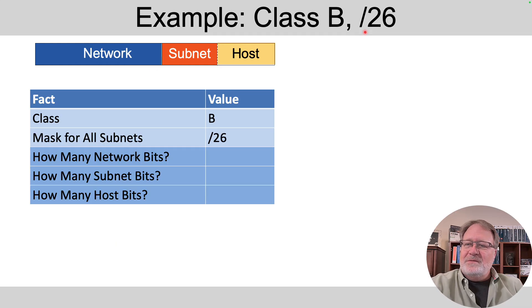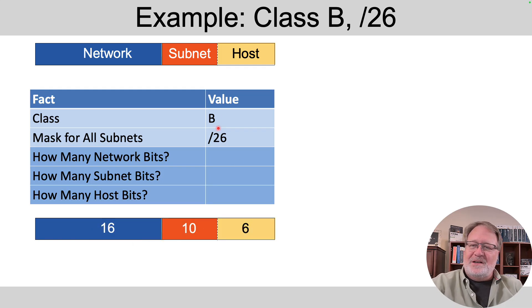Then with the class B example, if our one and only one mask is slash 26, we know we've got 16 network bits because it's a class B network that we're subnetting. Then with the slash 26 mask, we know network plus subnet bits add up to 26. So that gives us 10 subnet bits.